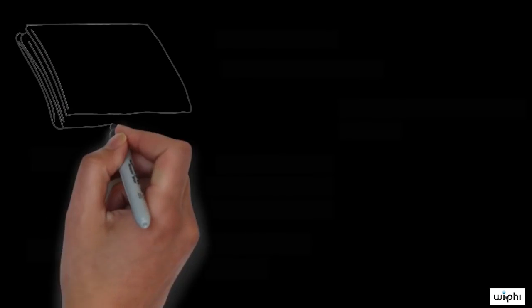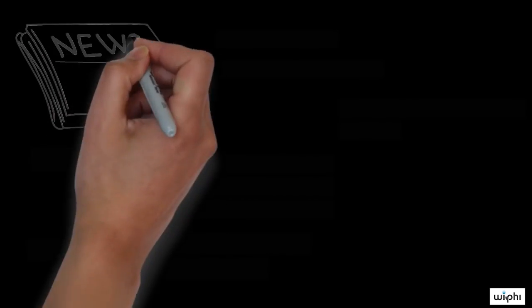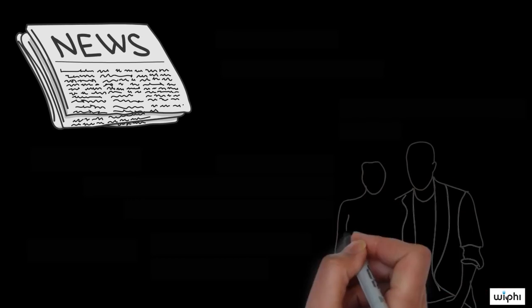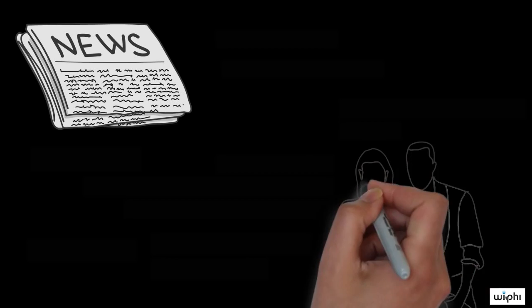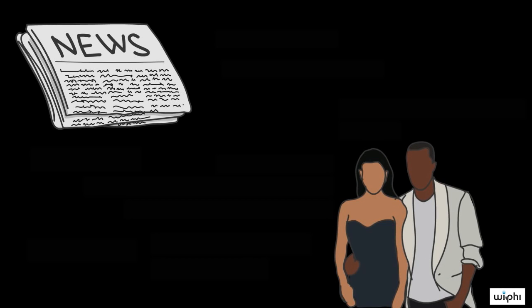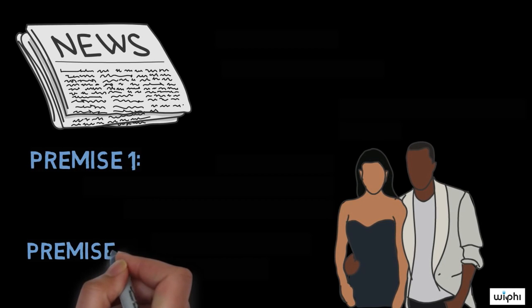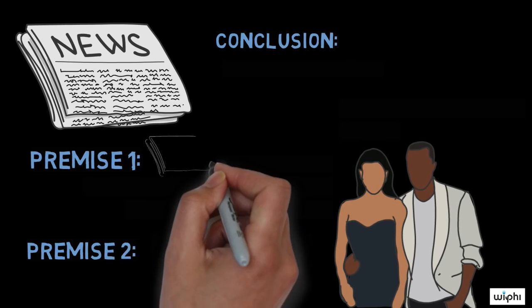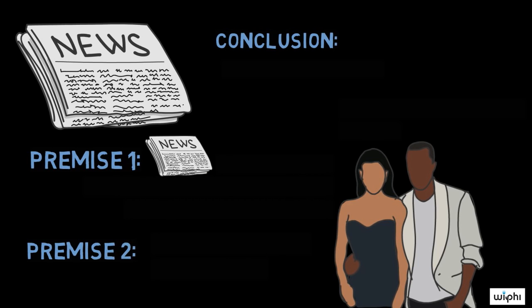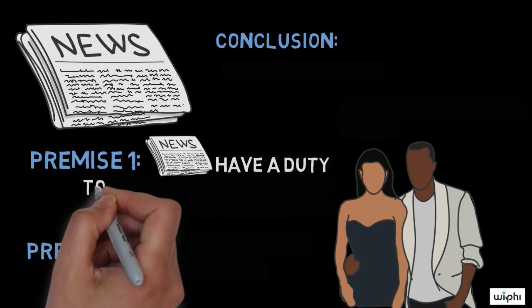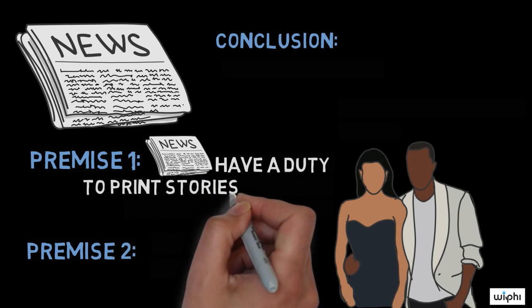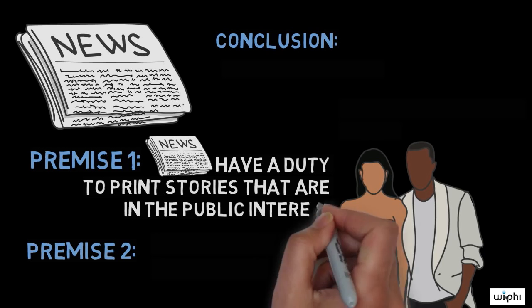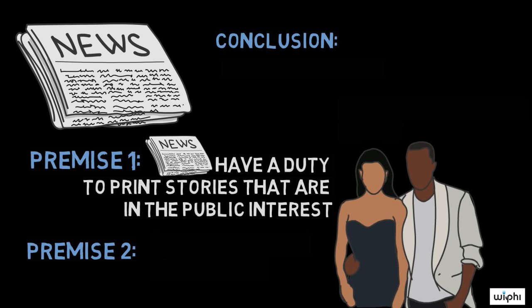Suppose a respectable newspaper was criticized for spreading celebrity gossip. And suppose that, in response, the editor gave the following argument. Premise 1: newspapers have a duty to print stories that are in the public interest.